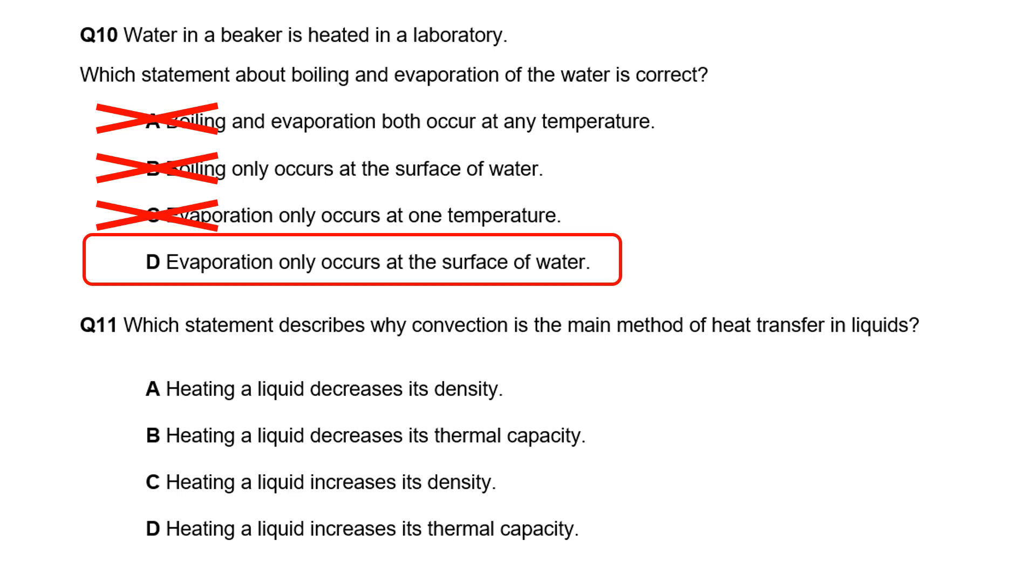Which statement describes why convection is the main method of heat transfer in liquids? The reason hot fluids rise is because their density decreases. Option A fits that statement. Heating something has no effect on its thermal capacity, so we can get rid of B and D. Heating decreases density, so C is wrong.